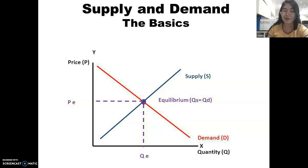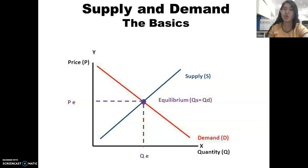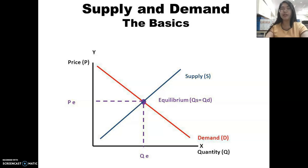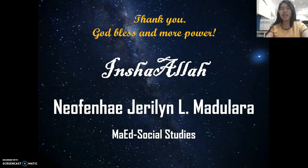Market equilibrium is a balance that exists when quantity demanded equals quantity supplied — there is a general agreement between buyer and seller in the exchange of goods and services at a particular price and quantity. If quantity supplied exceeds quantity demanded, there will be a surplus. If quantity demanded exceeds quantity supplied, there will be a shortage. These represent market disequilibrium.